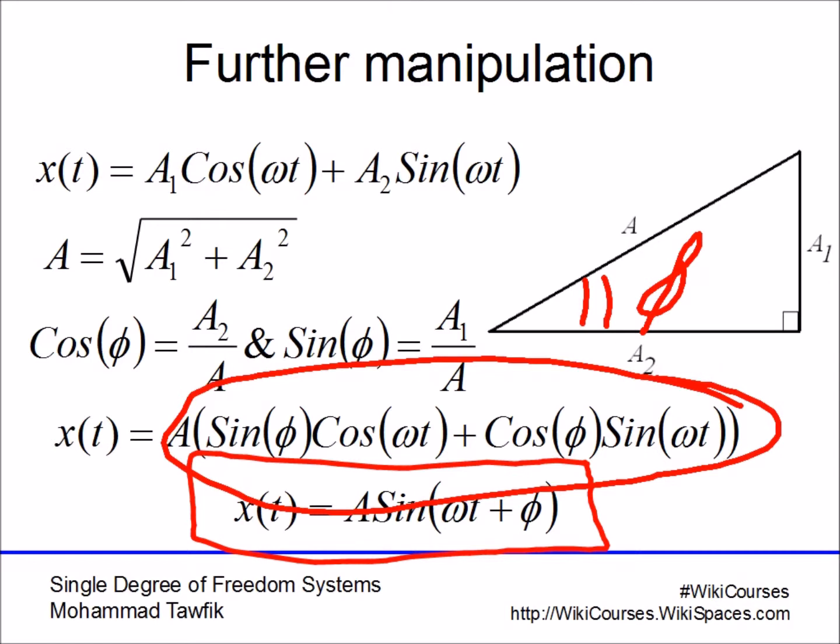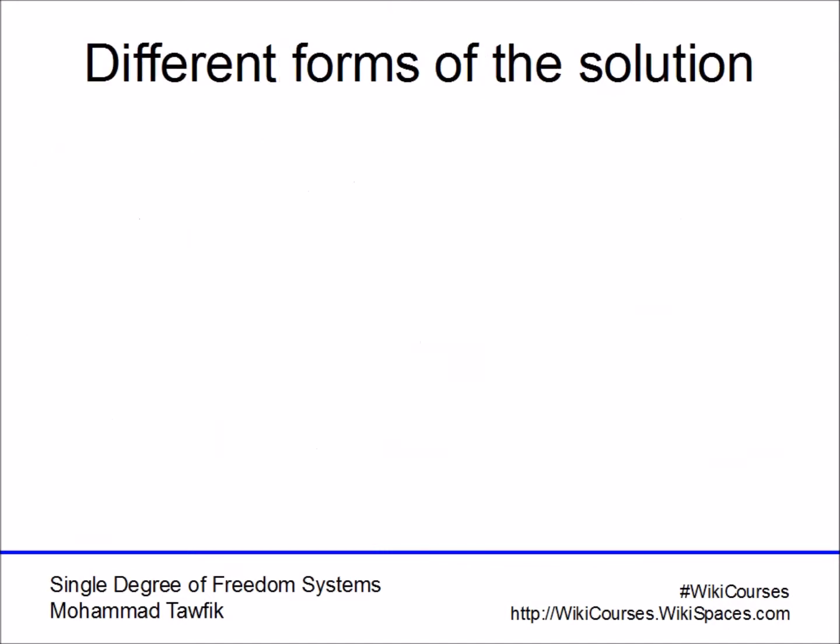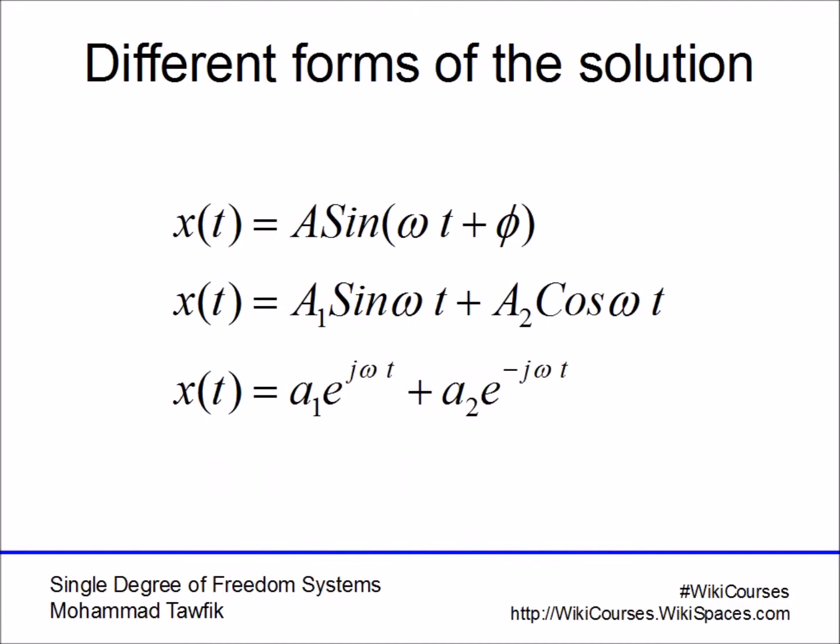You end up with a form of the solution that looks like x(t) equals some constant times sine ωt but there is what we call a phase shift. The phase shift here is another constant actually and A is the amplitude. The phase shift and the amplitude are the two constants that will need to be evaluated using the initial condition. So finally we end up with the solution in three different forms.